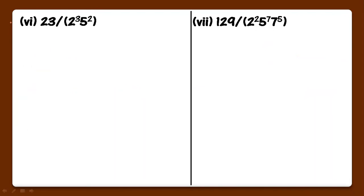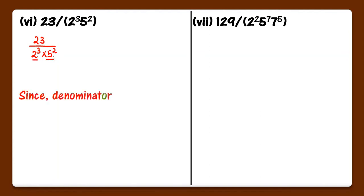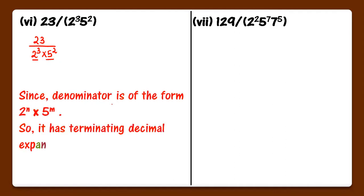Next part: 23 upon 2 cubed into 5 squared. Now clearly here we have the powers of 2 and 5. Since the denominator is of the form 2 raised to the power n into 5 raised to the power m, so it has terminating decimal expansion.